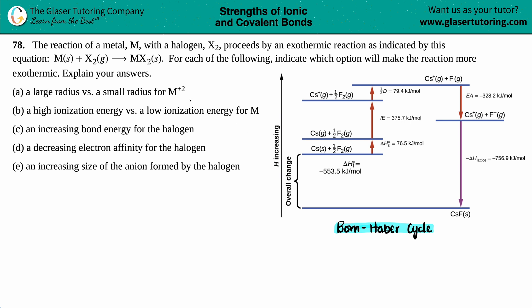Number 78. The reaction of a metal M with a halogen X₂ proceeds by an exothermic reaction as indicated by this equation. We have the metal, which is a solid, plus the halogen X₂ gas yields MX₂ solid. For each of the following, indicate which option will make the reaction more exothermic and then explain your answers. So we're going to answer each one of these, A through E, and give a little explanation as we go along.